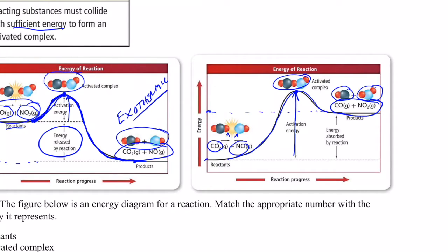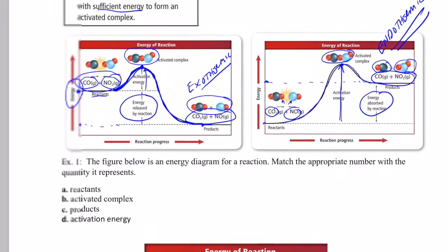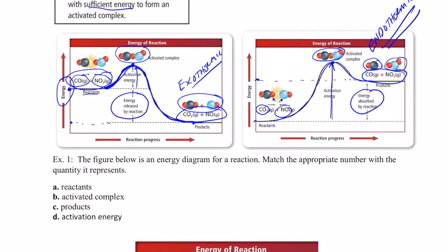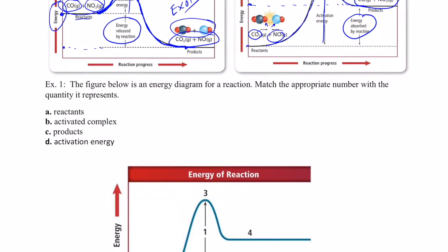The products have more energy at the end than the reactants started with, so we call these types of reactions endothermic — they require energy to be absorbed by the reaction.